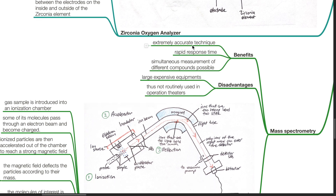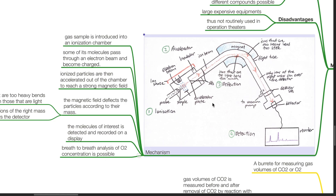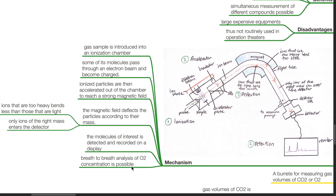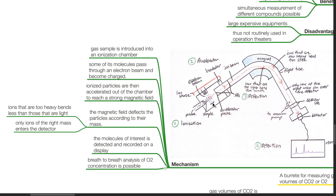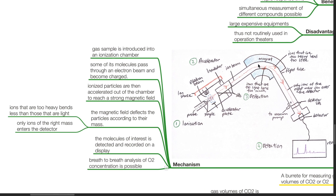Mass spectrometry benefits include extreme accuracy, rapid response time, and simultaneous measurement of different compounds. Disadvantages: large, expensive equipment is used, and thus it is not routinely used in operating theaters. Mechanism of action: a gas sample is introduced into an ionization chamber, some molecules pass through an electron beam and become charged, ionized particles are accelerated out of the chamber into a strong magnetic field which deflects them according to their mass. Ions that are too heavy bend less than those that are light. Only ions of the right mass enter the detector, and breath-to-breath analysis of oxygen concentration is possible.